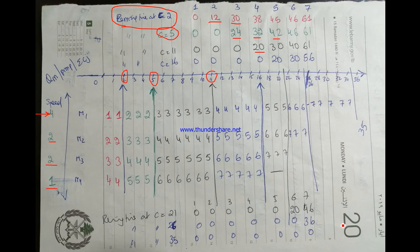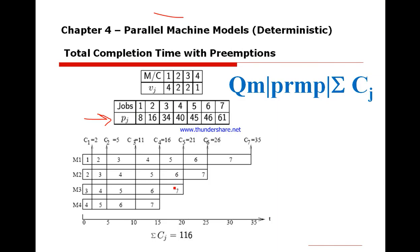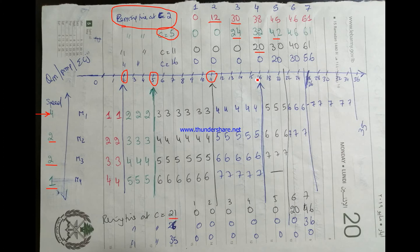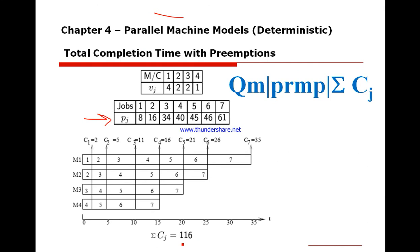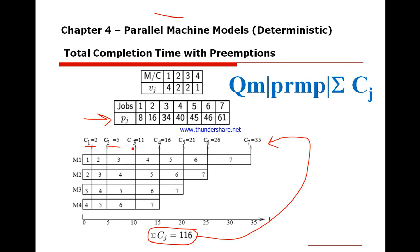Here at time sixteen we continue, then twenty-one — the middle of twenty — and we get to thirty-five. Going back to the slide, you can see the completion times sum to 116. Job one finishes at two, job two at five, job three at eleven, job four at sixteen, then twenty-one, twenty-six, and thirty-five. All jobs have been passed through the fastest machine, and the total summation of completion times is 116.